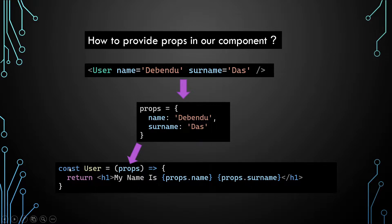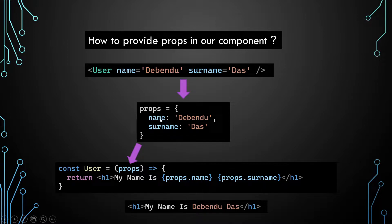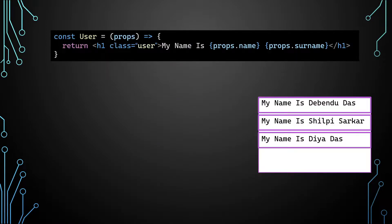This props object is taken as input in our User component and can be used in our JSX output. In our case we write 'My name is' as simple text, then use props.name and props.surname inside curly braces. After rendering, the whole JSX is replaced by the props values and becomes something like 'My name is Debendu Dash', where Debendu is the prop name and Dash is the prop surname.